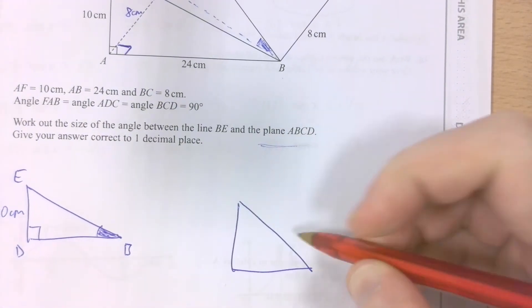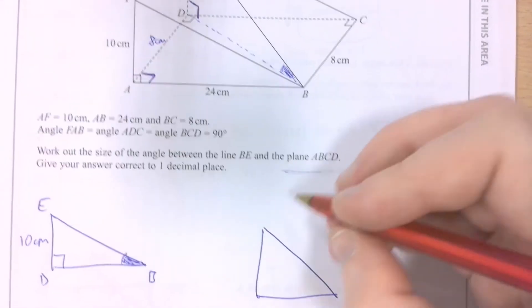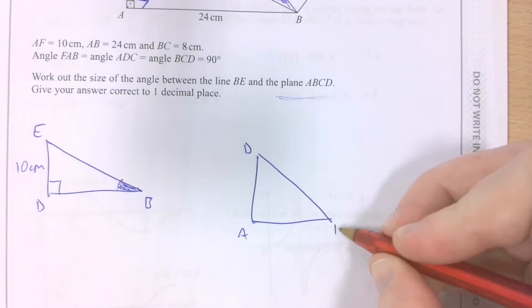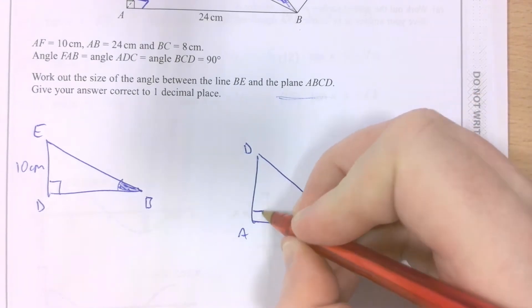There it is. So this up here is the equivalent of point D. This here is the equivalent of point A. This here is the equivalent of point B. The right angle.